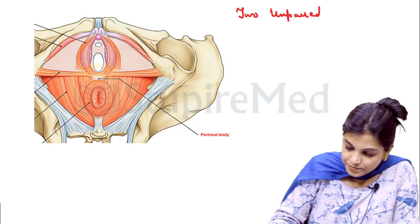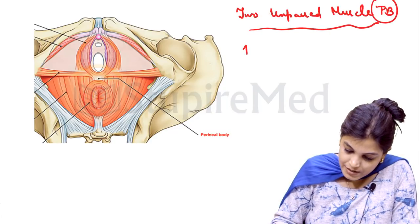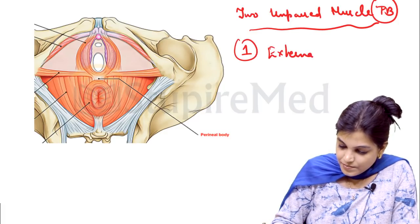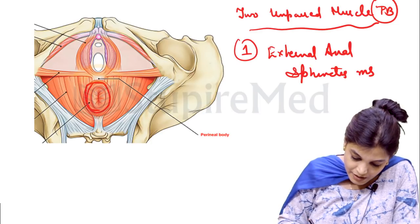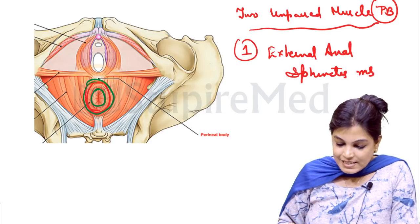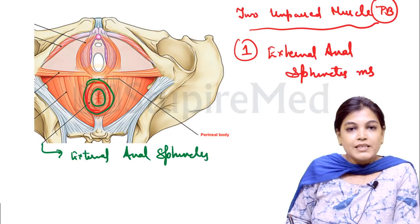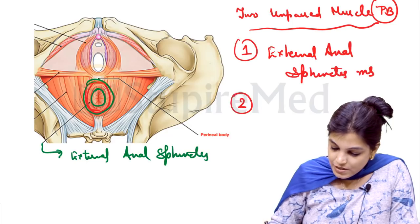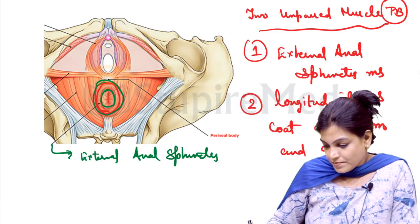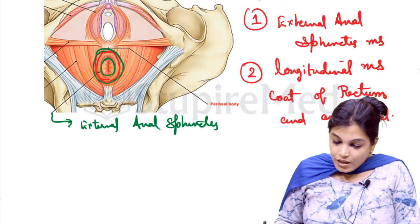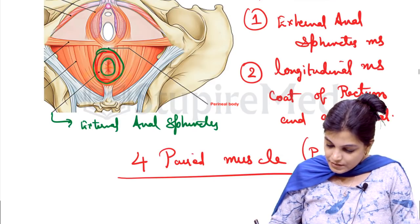The two unpaired muscles forming the perineal body are: first, the external anal sphincter — the muscle encircling the anal opening — and second, the longitudinal muscle coat of the rectum and anal canal.